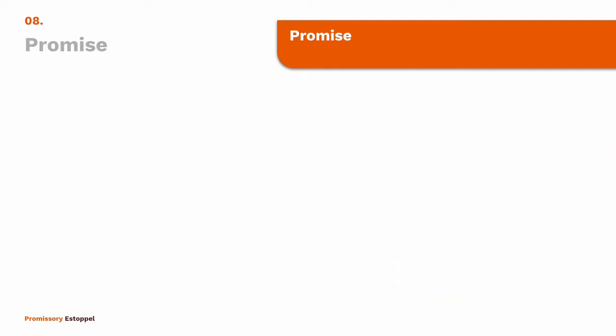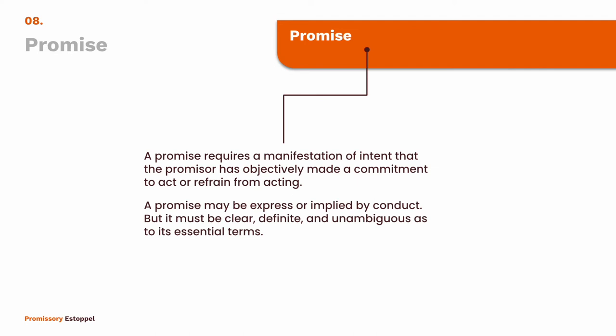The first element is a promise. The definition we've been using: a manifestation of an intent to act or not act in a specified way, so made as to justify the promisee — the person to whom the promise was made — as understanding that a commitment has been made. That manifestation could be spoken word, written word, or implied by conduct, but regardless it must be clear, definite, and unambiguous as to its essential terms.